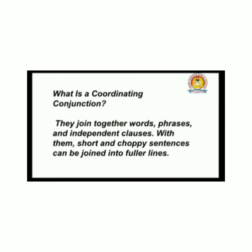There are three types of Conjunction. The first one is Coordinating Conjunction. When they join together words, phrases, and independent clauses, short or separate sentences can be joined into a fuller line. When it is a Coordinating Conjunction, it connects independent phrases.